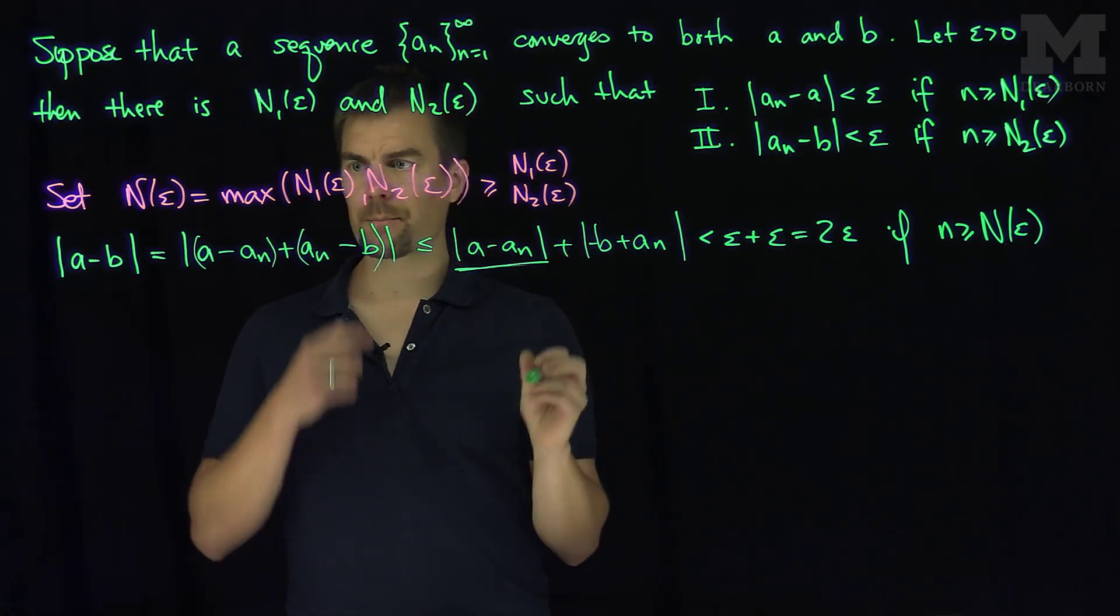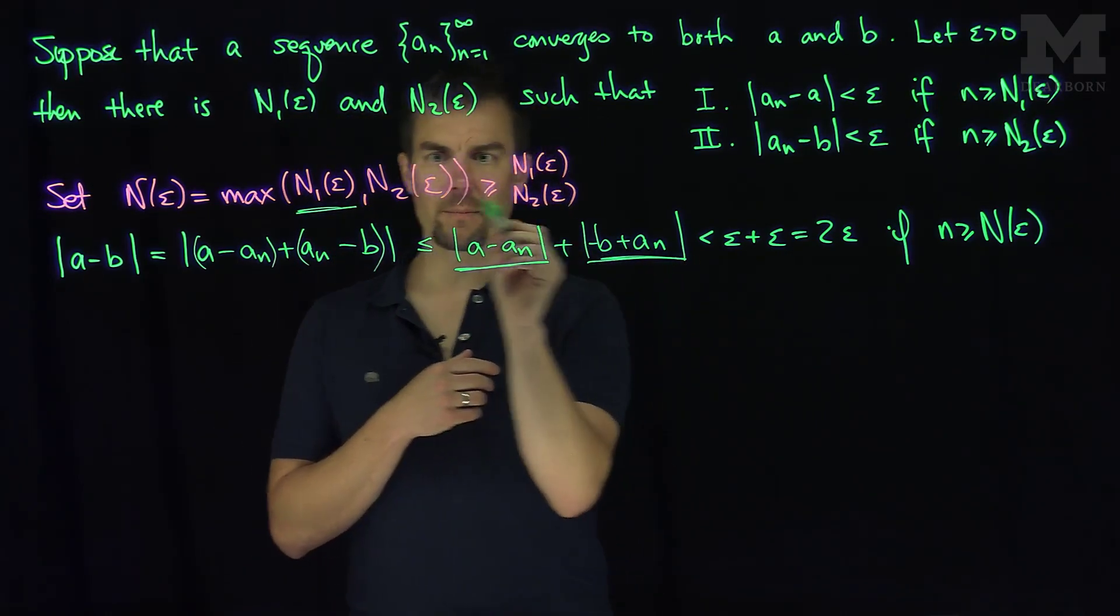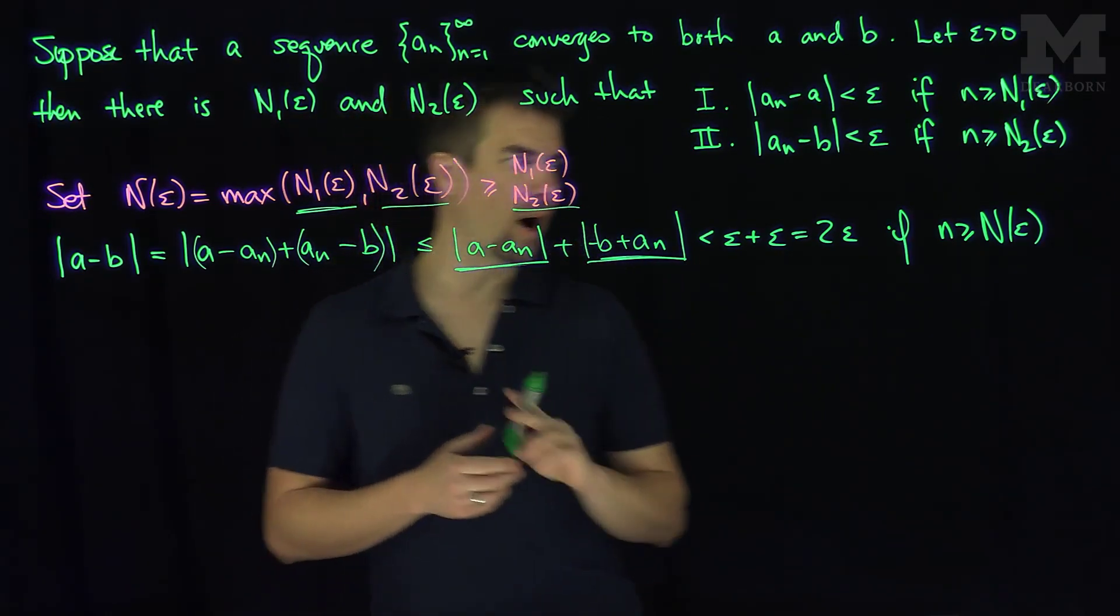So this will be less than epsilon, provided that we're bigger than N1, which we certainly are, and this will be less than epsilon, provided we're bigger than N2, which we certainly are.